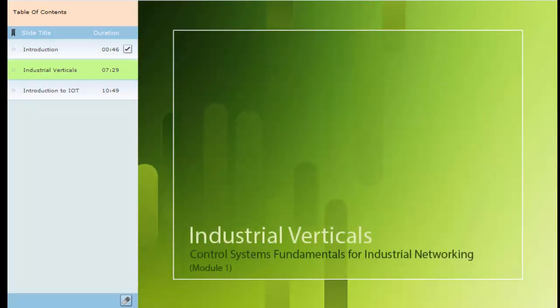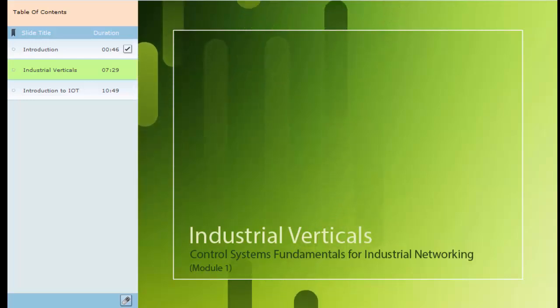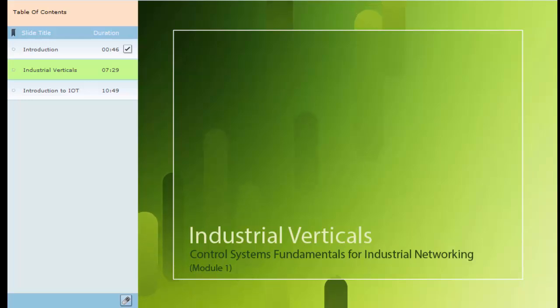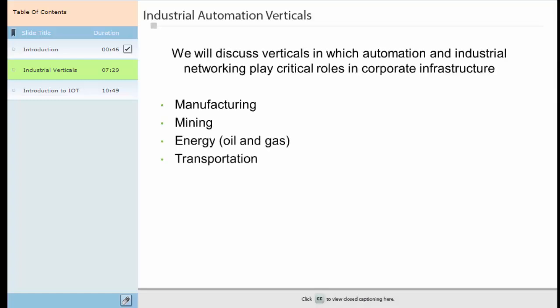In this lesson, you will learn the major sectors of the economy that exist within industrial networking. Major economic areas such as manufacturing, production, energy, mining, and transportation are undergoing a transformation as robots, vehicles, and industrial control systems connect to the Internet. New demands on industrial networks require a greater need for improved interconnectivity across industrial equipment and enterprise networks. We will discuss verticals in which automation and industrial networking play critical roles: manufacturing, mining, energy, oil and gas, and transportation.